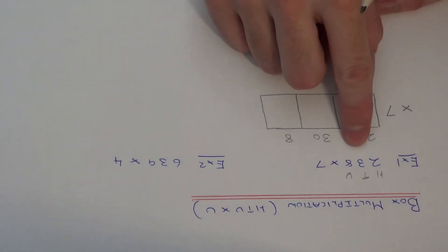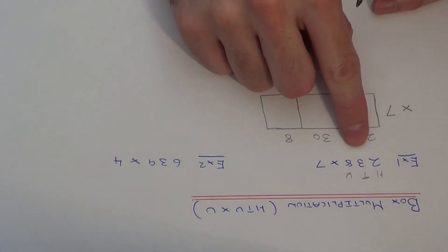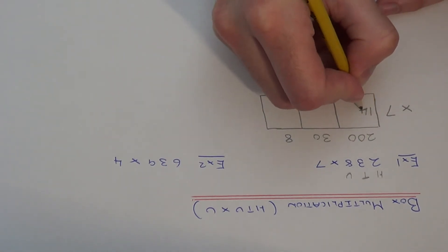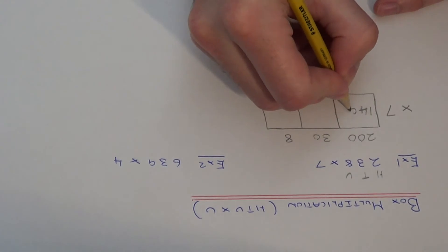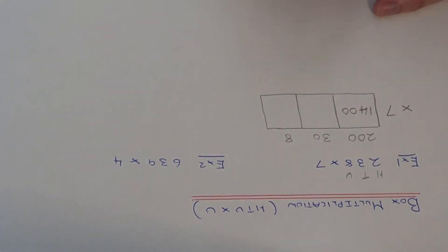Our first one is 200 times 7. We can cover up the zeros to make things easier. So 2 times 7 is 14. Write that in the box. Since we've covered up two zeros, we need to add those zeros back on.